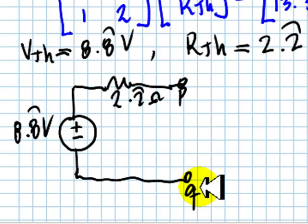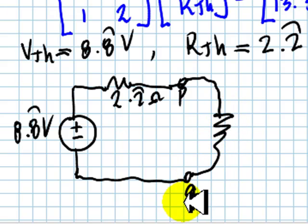For part B, we need to connect an external resistor, Rx, that extracts maximum power, and we know that value has to be R Thevenin, 2.2 ohms periodic. That is the solution to part B.